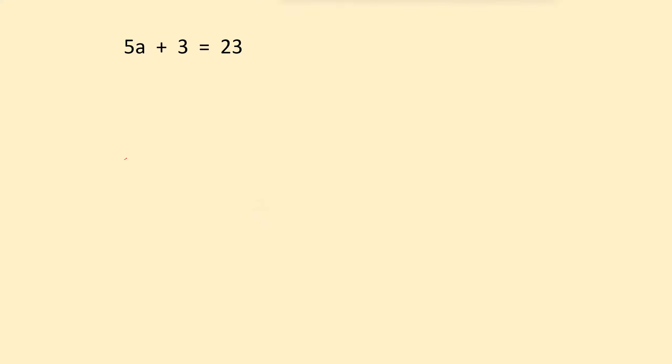So what we would do is start at the a, and ask ourselves what has actually happened to that a. Well, first it was multiplied by 5, and then someone came along and added another 3. That got us to 23 as the answer.